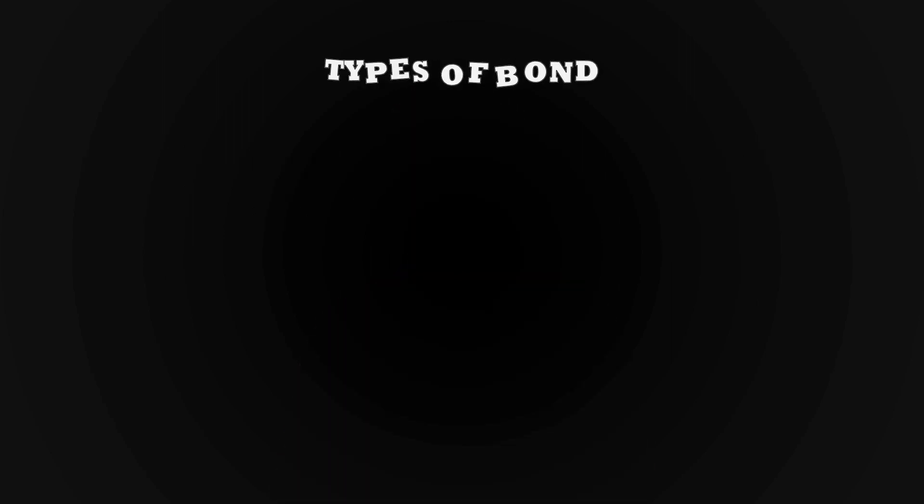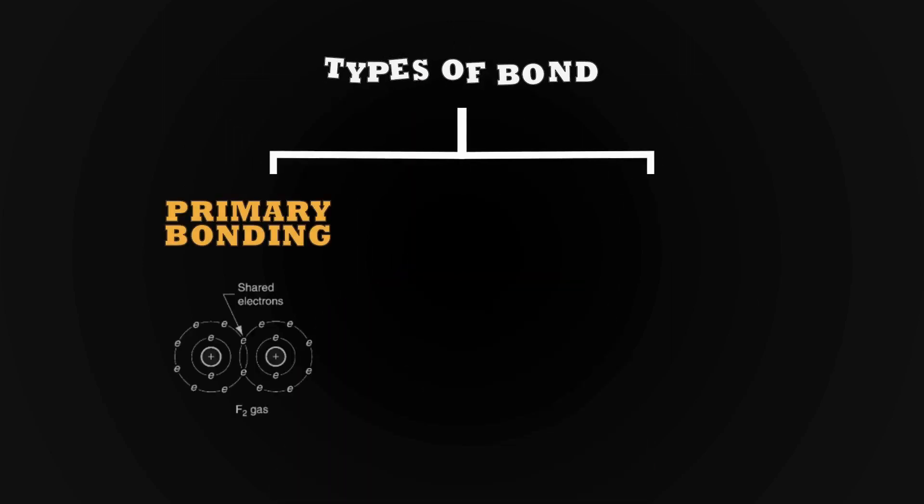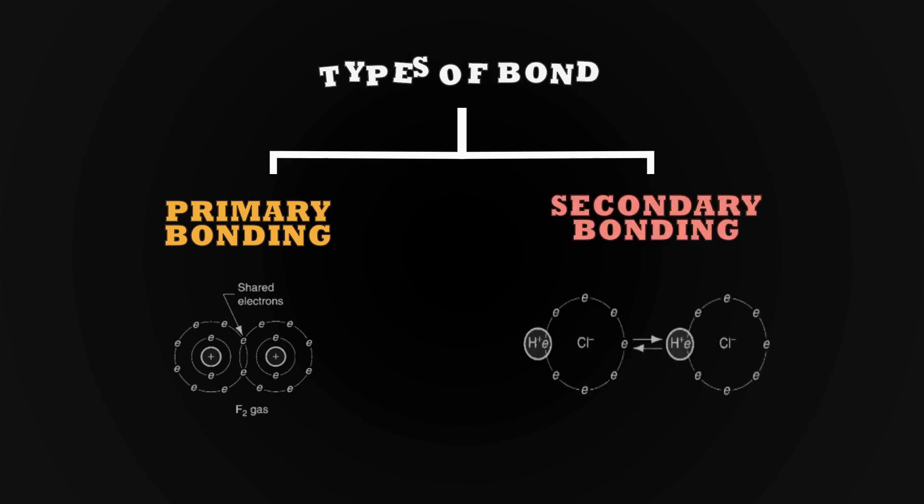One is primary bonds, generally associated with the formation of molecules. The second is secondary bonds, generally associated with attraction between molecules. Primary bonds are forces within a molecule. Secondary bonds are forces between two or more molecules.